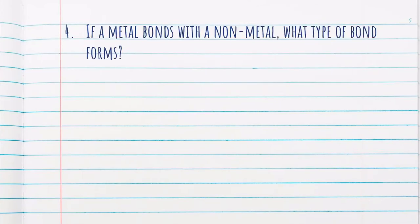Our next question asks what type of bond is formed when a metal bonds with a nonmetal? Metals have really low electronegativities and nonmetals have really high electronegativity, meaning a nonmetal can take an electron from a metal, creating an anion and a cation. They are not sharing electrons but instead are held together because of the positive and negative charges, making them form an ionic bond.